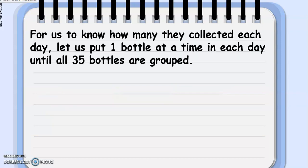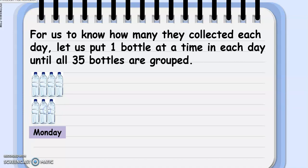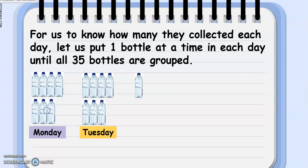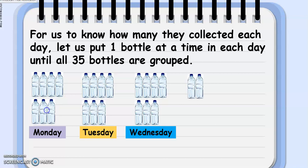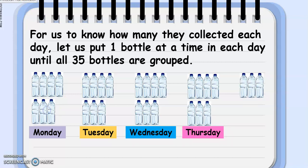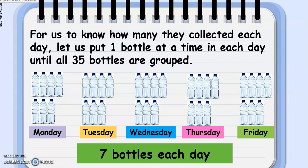Now, for us to know how many they collected each day, let us put one bottle at a time in each day until all 35 bottles are grouped. So, we have here one, two, three, four, five, six, seven on Monday. And, we still have the same number of bottles collected on Tuesday. The same goes with Wednesday. We still have the 7 bottles here. The same goes also with Thursday. We still have the 7 bottles. And, we also have the same number of bottles on Friday. There you go. So, there were 7 bottles each day.